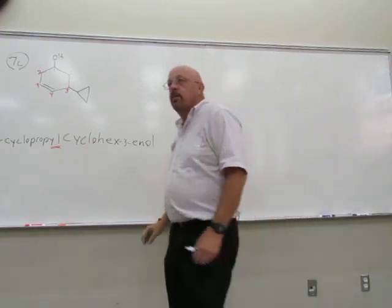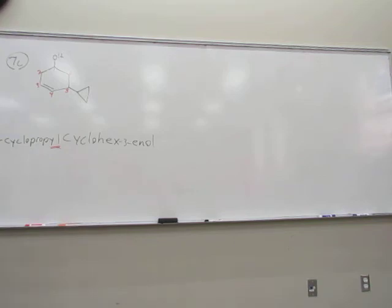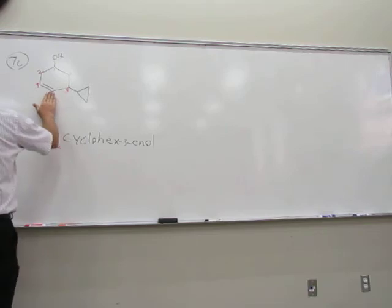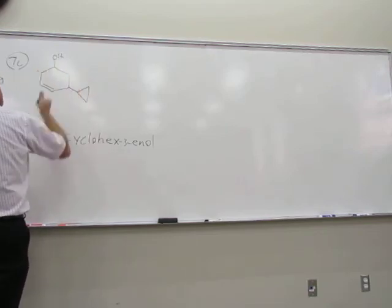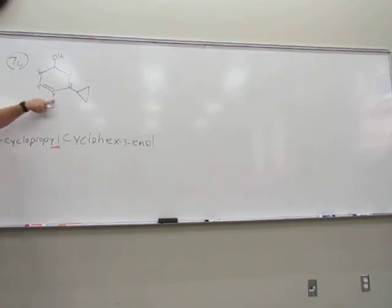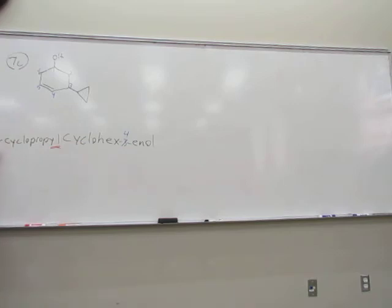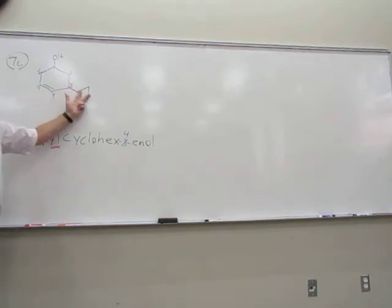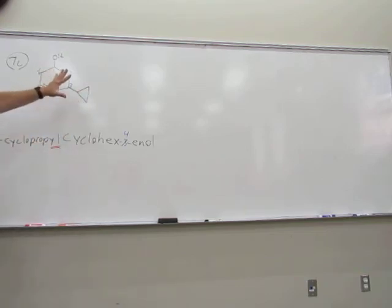A student asks: wouldn't it have lower numbering going the other way? Going that way would make the alkene start on carbon four. Alkene takes precedence over the substituent — you might get a smaller number for the substituent that way, but it doesn't matter. Alcohol first, then alkenes and alkynes, then you worry about substituents. So you can't use that numbering. That's a common mistake.